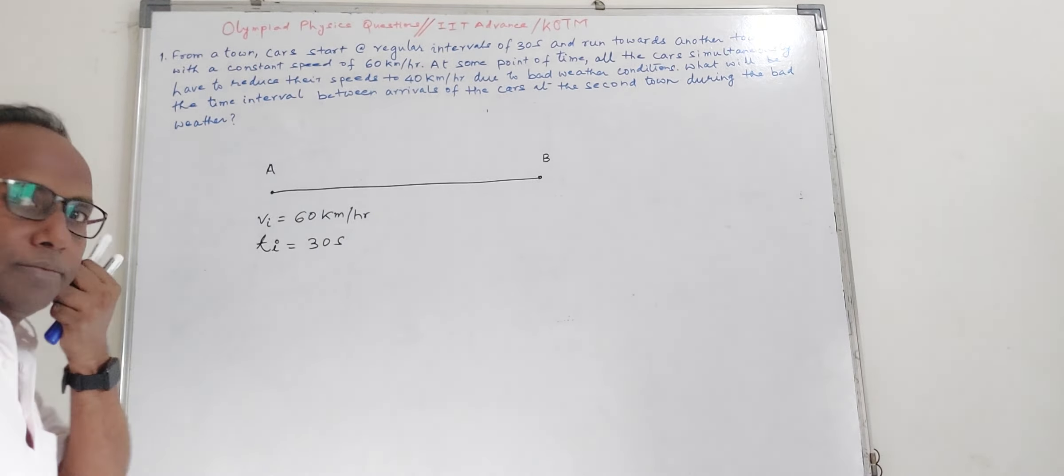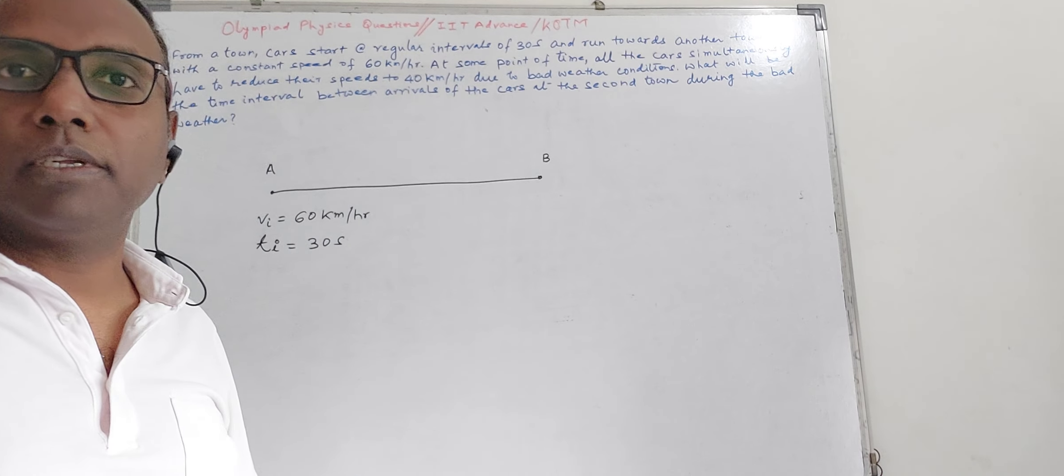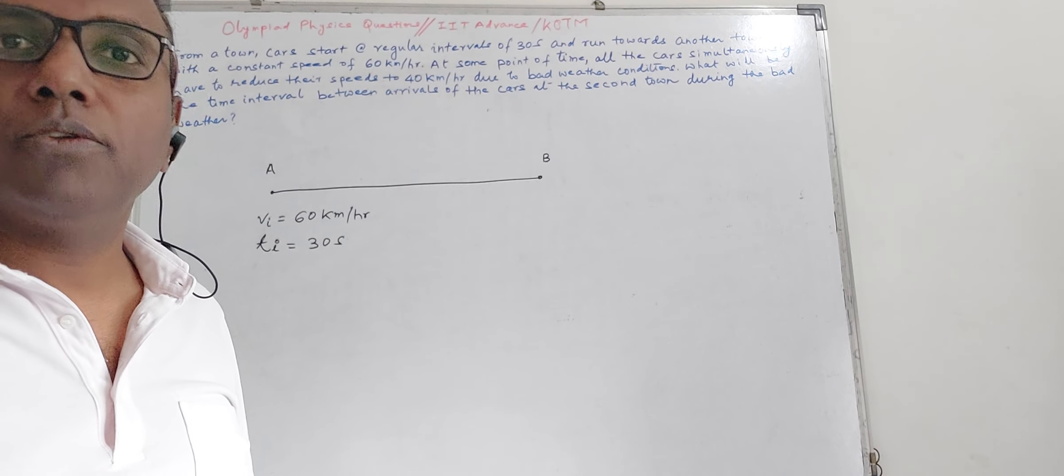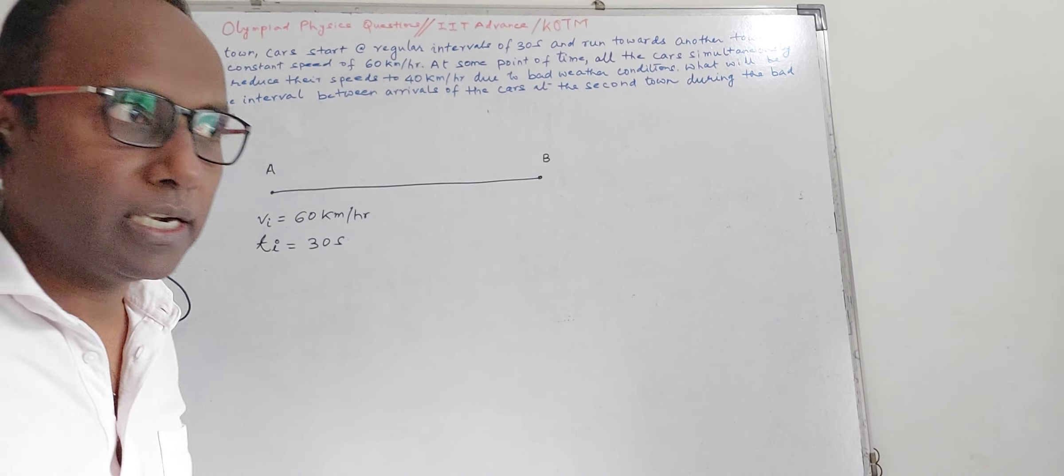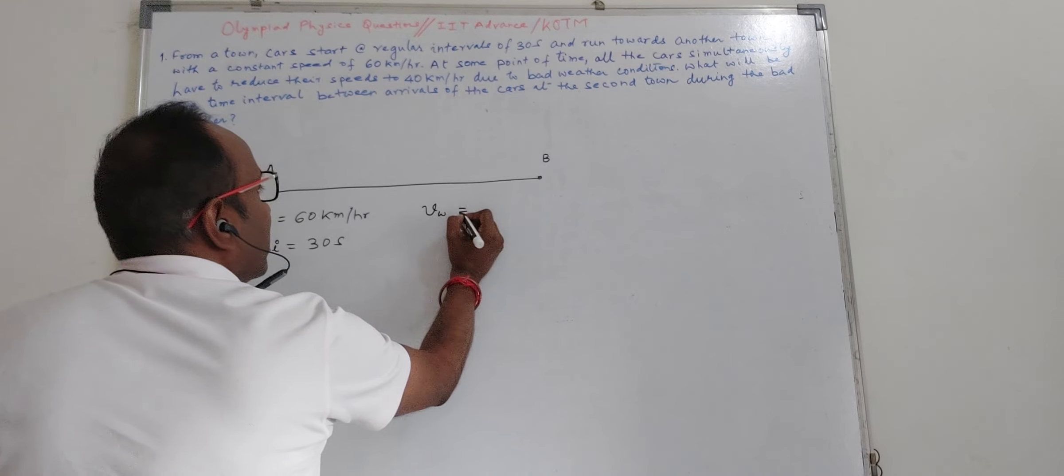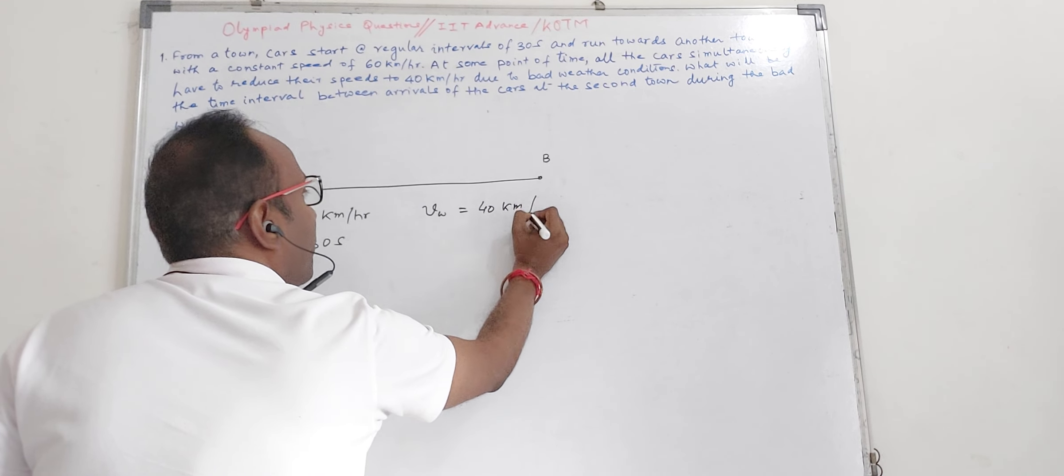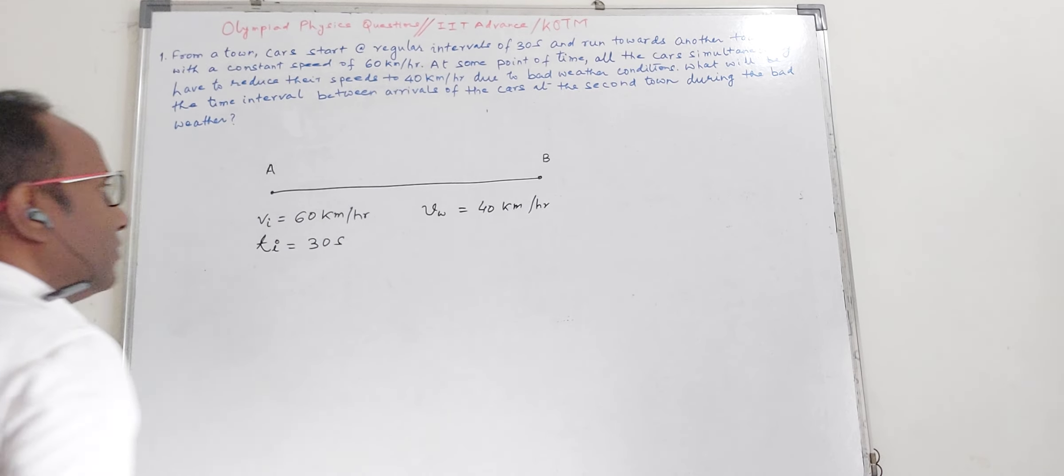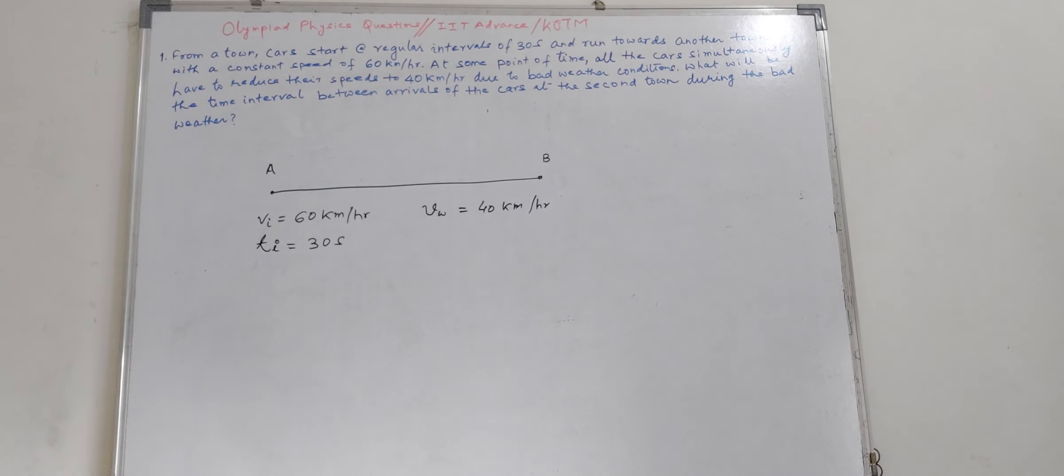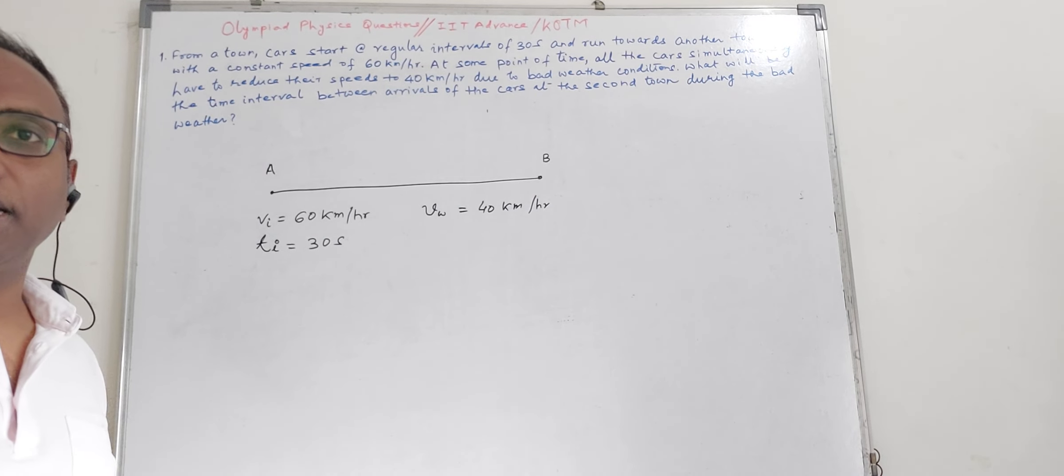Now the third part of the question says that all cars have to reduce their speeds to 40 km per hour due to weather conditions. The weather goes bad, so if we say that speed as VW when the weather is bad, that is 40 km per hour.